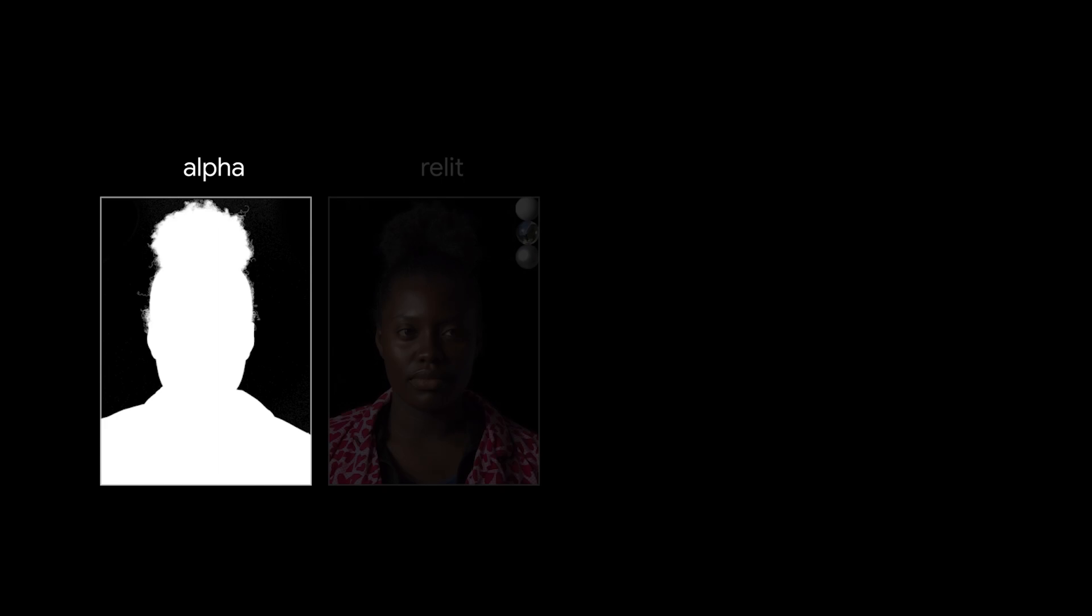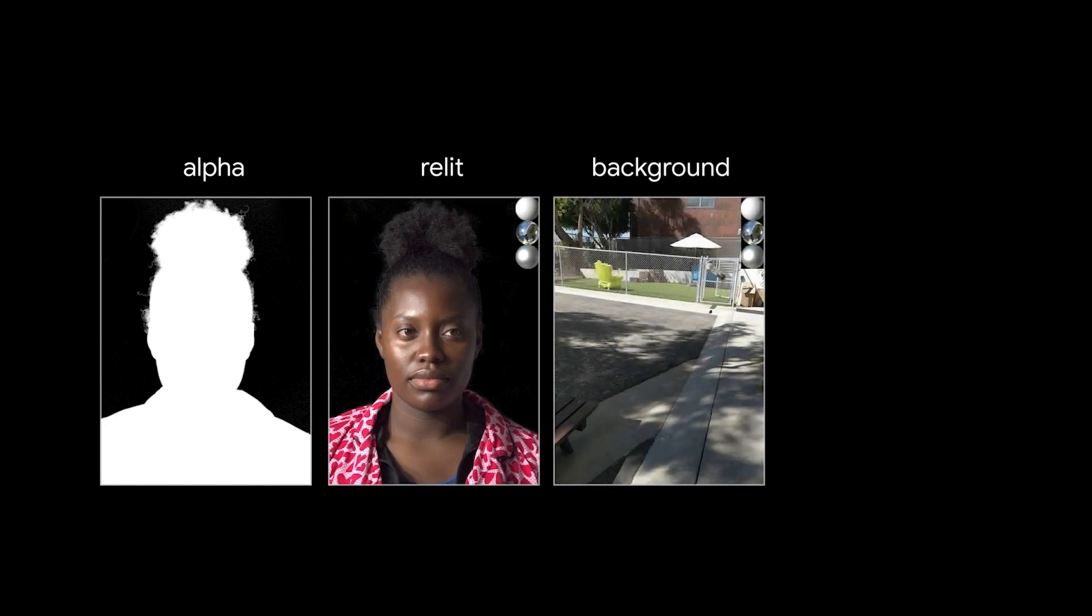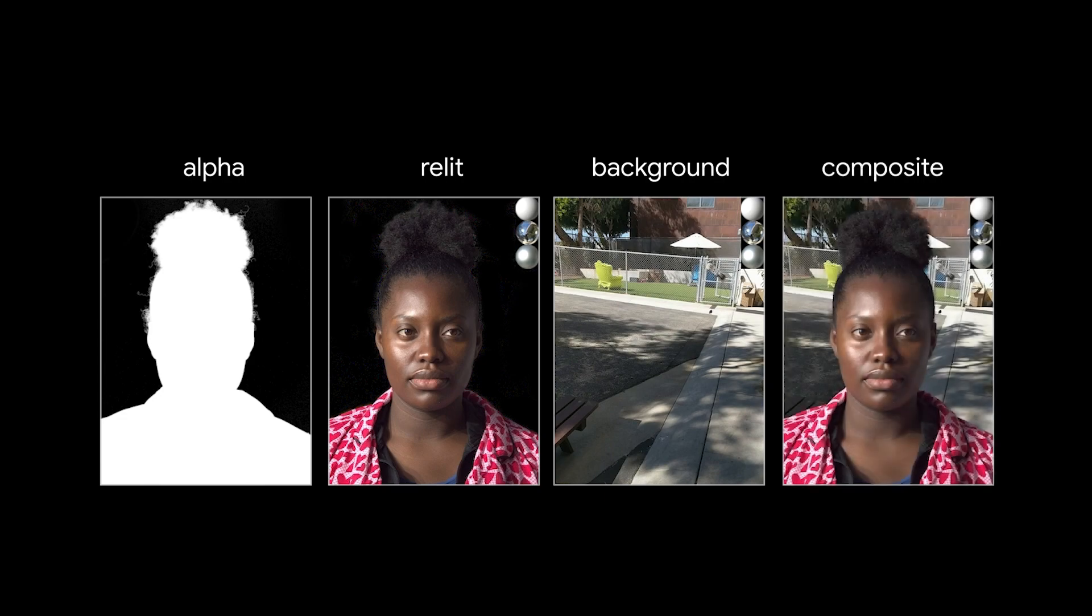At capture time, we also acquire the images used to compute a robust alpha channel. We then composite the relit subjects over the high-resolution backgrounds from deep light to form training images that mostly appear as in-the-wild portraits with their known illumination. Here are a few examples with ground truth lighting inset in the upper right corners.